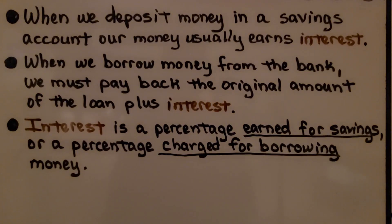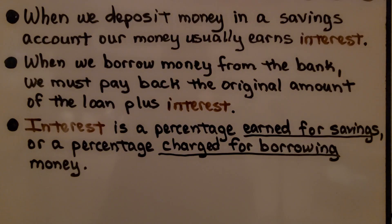When we deposit money in a savings account, our money usually earns interest. When we borrow money from the bank, we must pay back the original amount of the loan plus interest. Interest is a percentage earned for savings or a percentage charged for borrowing money.